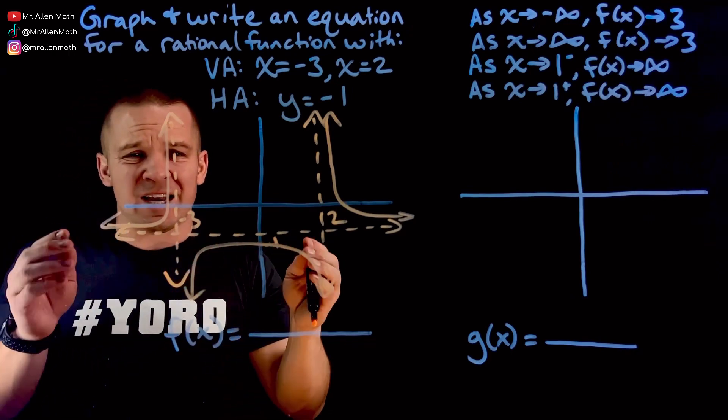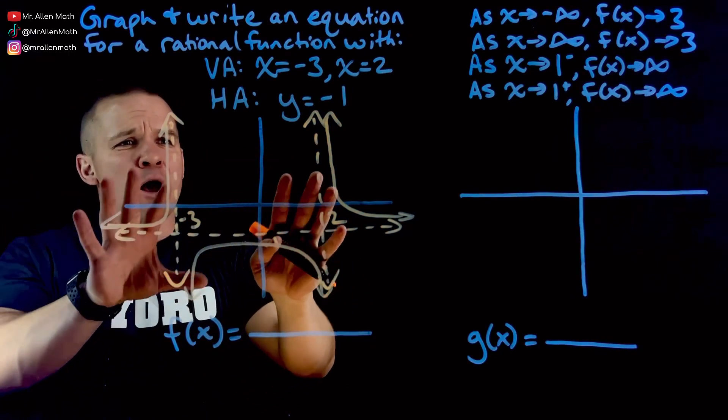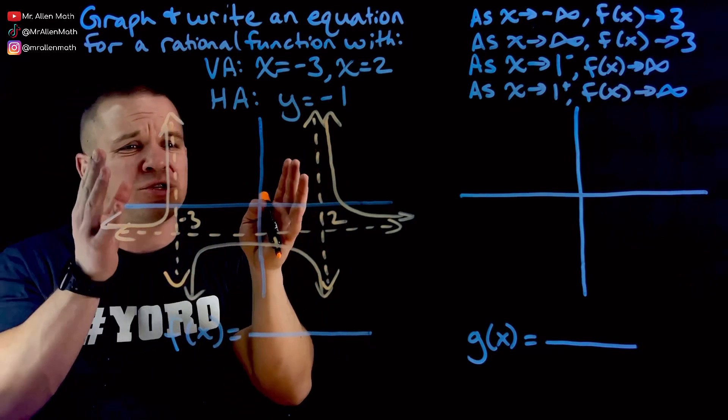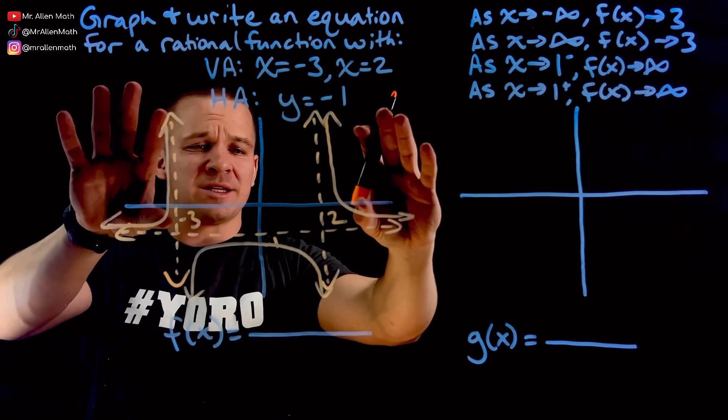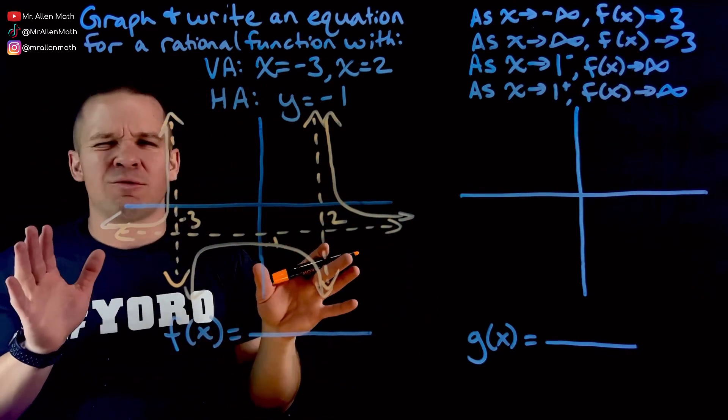Now there are times where things can go both down on the same asymptote and stuff like that. But for right now, pretty common rational function with two asymptotes here, where you get two parts out here, one guy in the middle down there. It would be flipped if you had negative, so we're not going to do that.